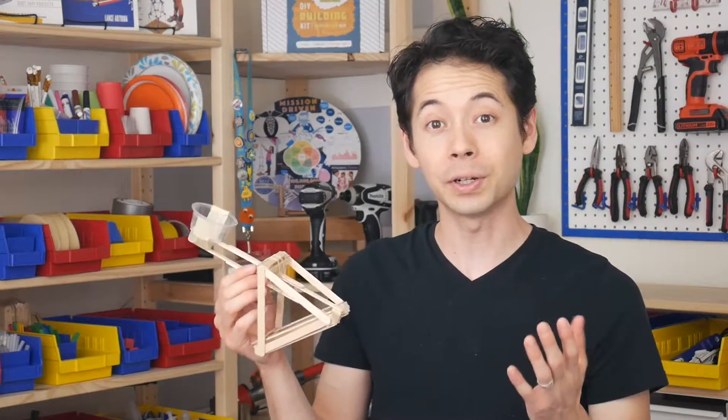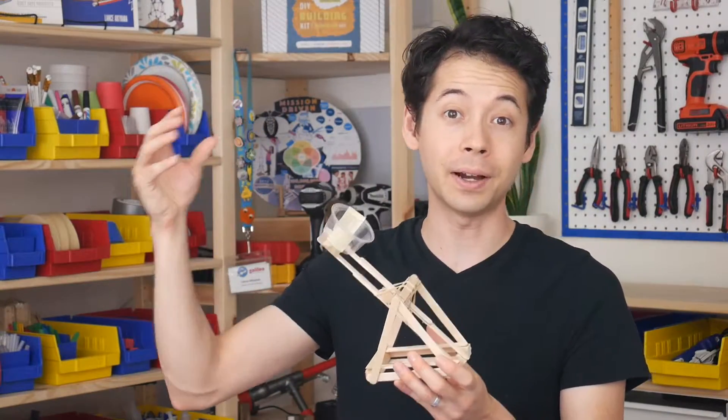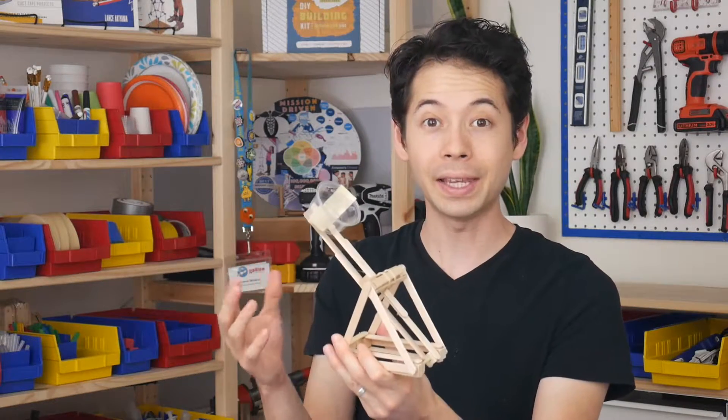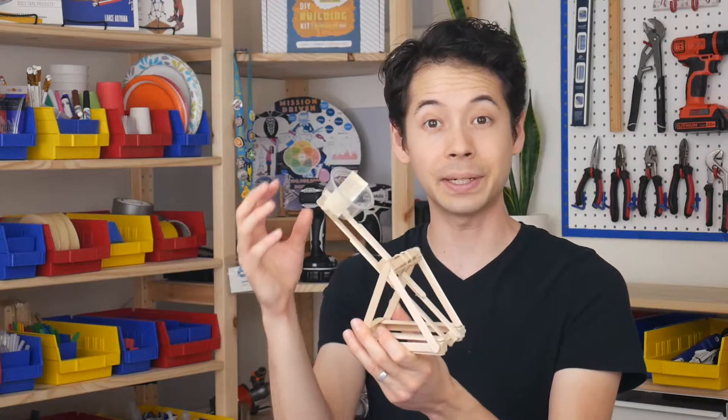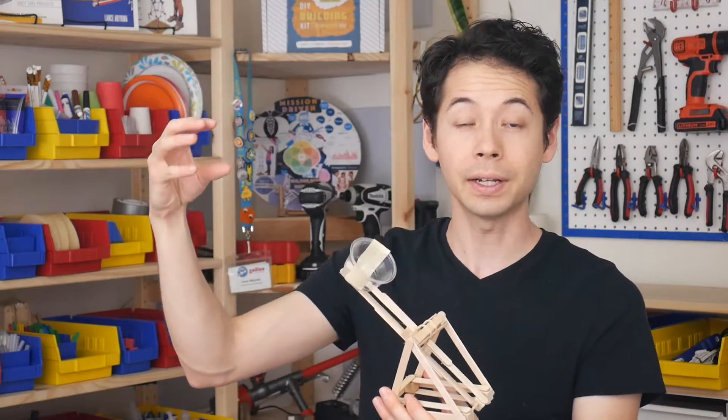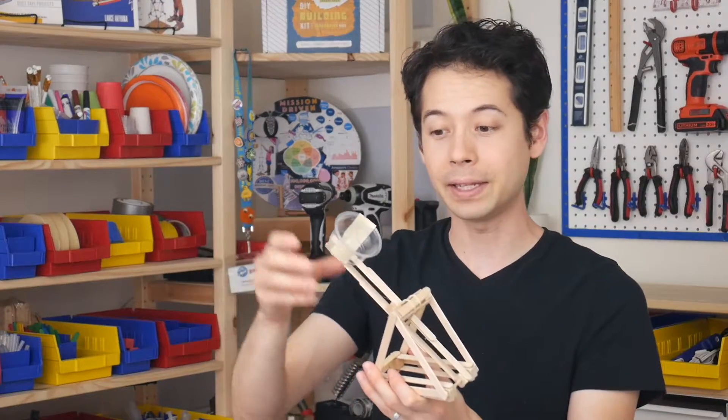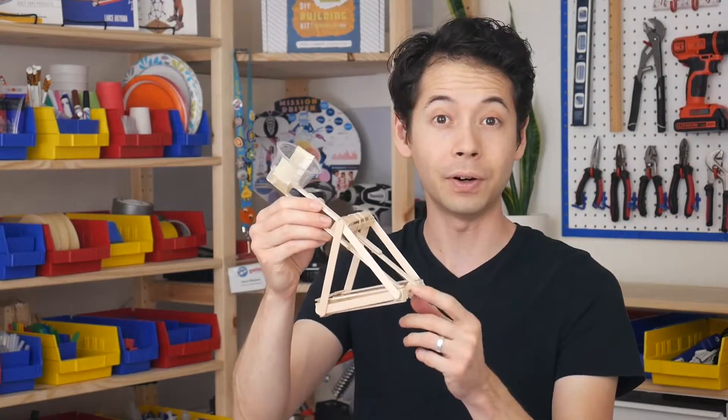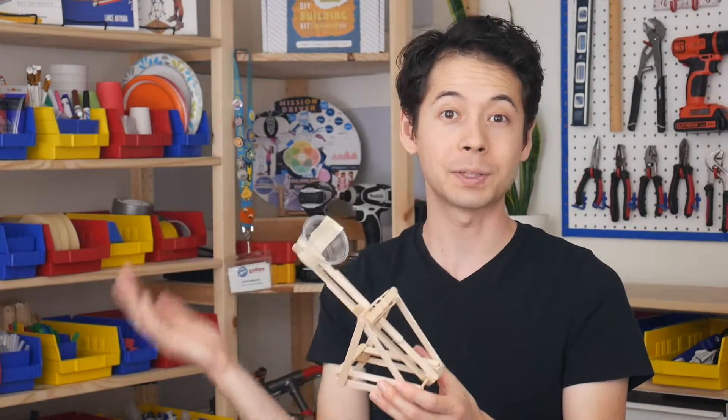And the other thing that you can tinker with is the length of the catapult arm. So right now, when I pull the catapult arm back and then let go, the energy from the rubber bands is accelerating this cup up and forward. But if the catapult arm was longer, then it could go faster because when things are farther away from the axis of rotation, or in this case, the fulcrum, they will move at a faster speed.